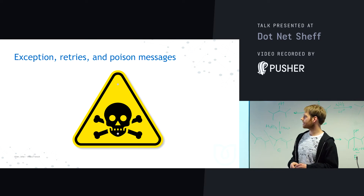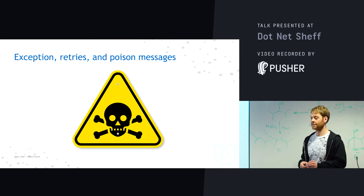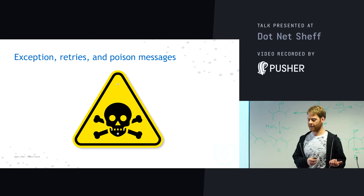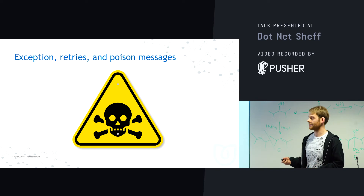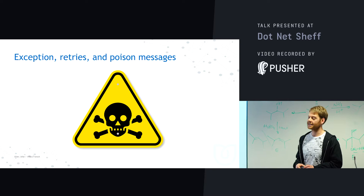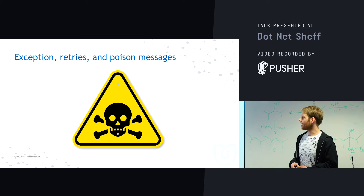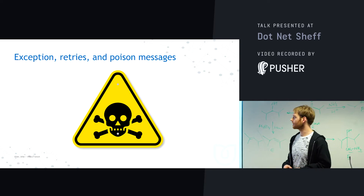Exceptions, retries, and poison messages: if we get any exceptions from our consumers, it will put the message onto an error queue. You can also tell it to retry the message — for example, retry three times for a transient error like a database connection error. If it still fails, we push it into an error queue to deal with later.